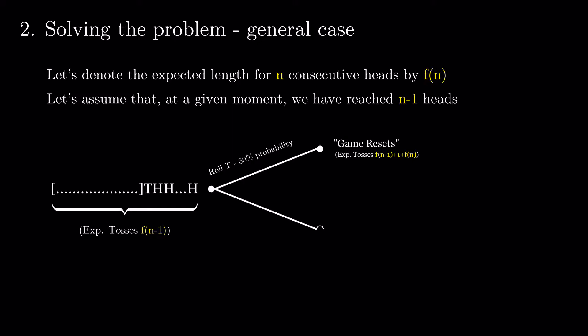And with 50% probability, we get the last head, in which case we had the expected f(n-1) plus 1 tosses.